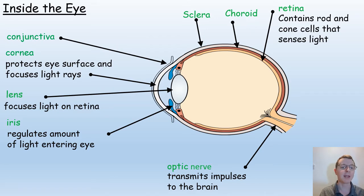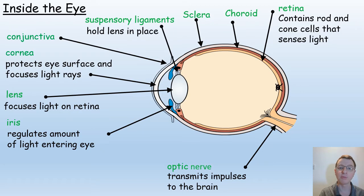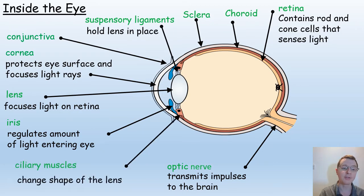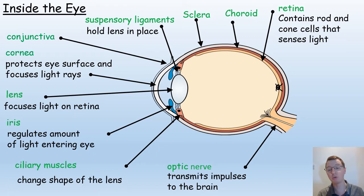Then we have the lens. It's the job of the lens to change shape and focus light so that it hits the back of the retina. To help the lens change so that the light will always focus at that particular point, we also have suspensory ligaments which hold the lens in place and ciliary muscles. It's the job of those ciliary muscles to contract and relax and help to change the shape of the lens from either thick to thin, or thin to thicker, depending on what kind of object you're looking at.